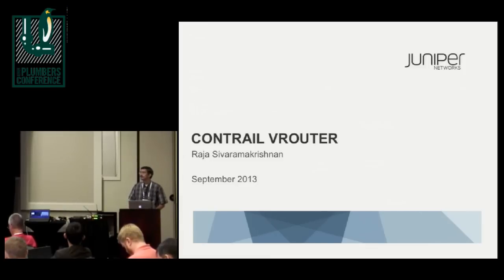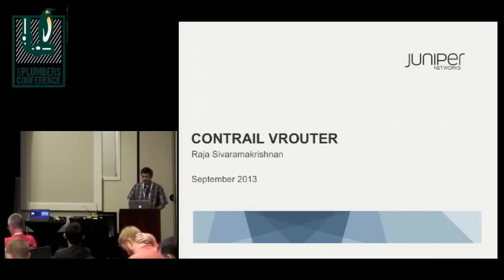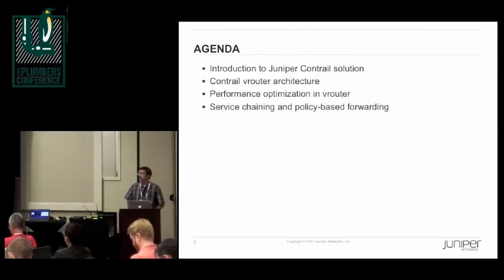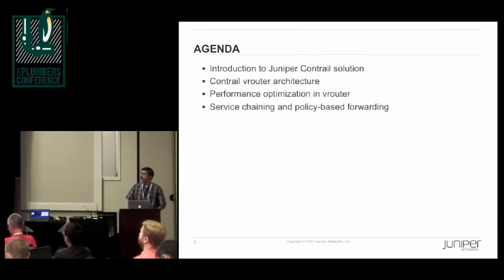Hi, my name is Raja Sivaramakrishnan. I am a software engineer at Juniper Network. Previously I was at Contrail Systems, which was acquired by Juniper at the end of last year. I will be talking about the Juniper Contrail solution, then go into details of the Contrail vRouter, discuss performance optimizations, and finally talk about service chaining and policy-based forwarding.